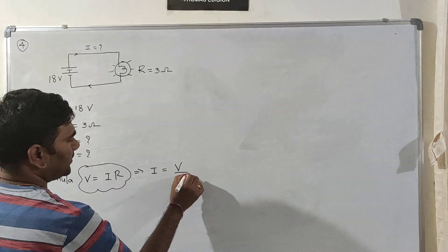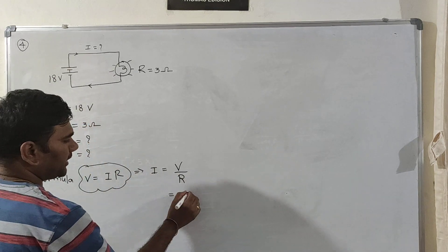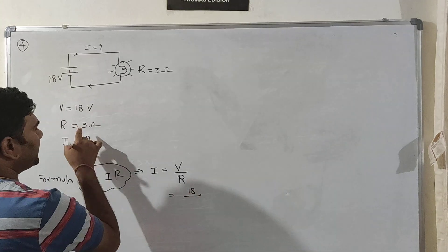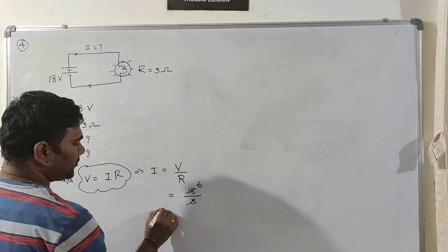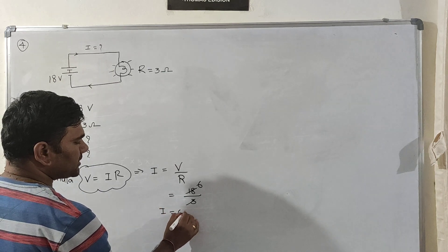Let us substitute. V is 18, R is 3. So 18 divided by 3... Therefore, I equals 6 amperes.